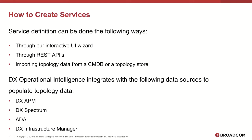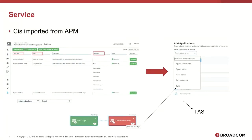Out of the box, we offer integrations and the ability to pull in topology data from APM, Spectrum, ADA, and IM. We also offer other third-party integrations. When using APM data and going through the service creation wizard — once you click on Add Service — you have the option of importing a topology. You get to choose what kind of configuration item, which is called a CI or Sys, gets imported from APM into your service creation wizard.